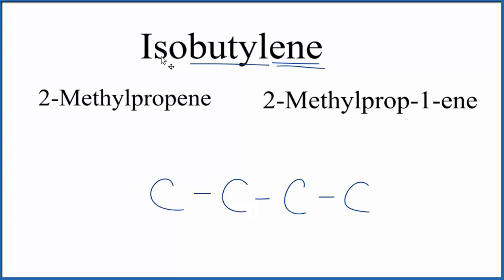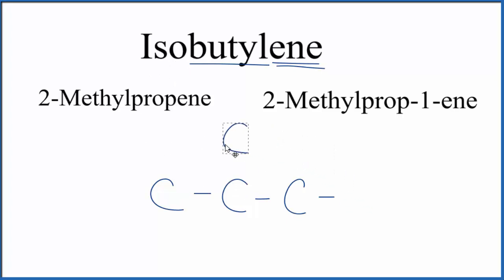The 'iso' tells us that we're going to have one of the carbons branched off, usually on the second carbon. So this carbon here will be branched off up here — that's the iso. And the 'ene' is going to be a double bond like this here.